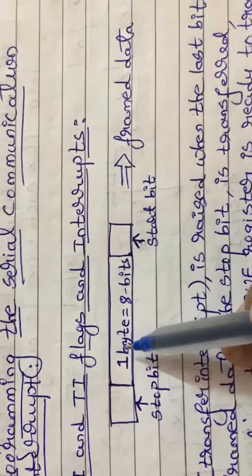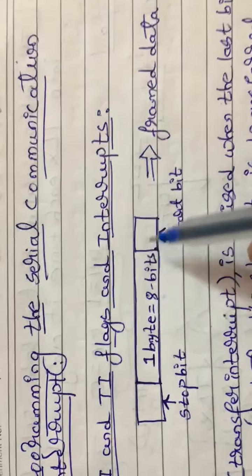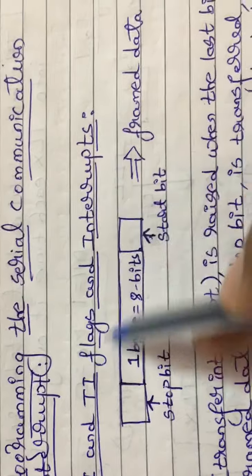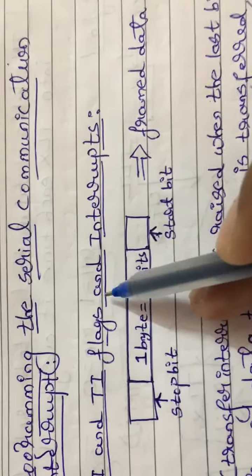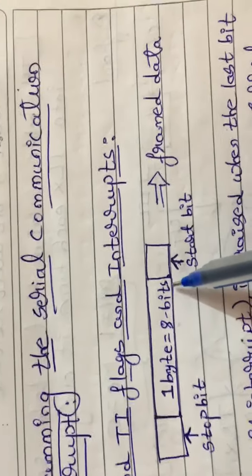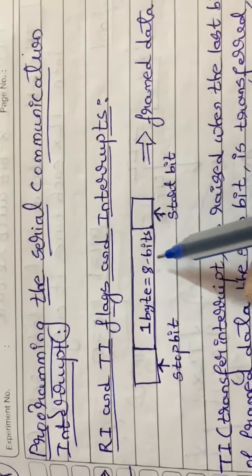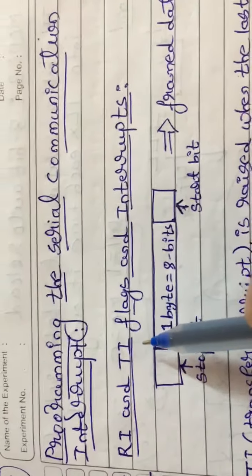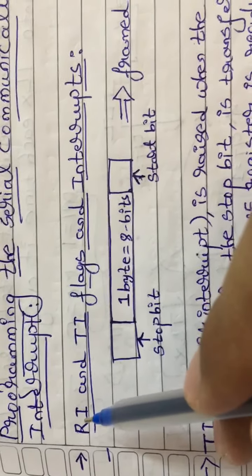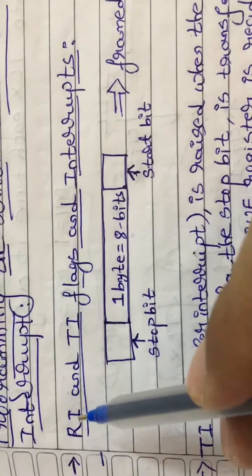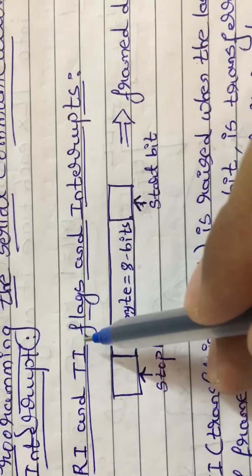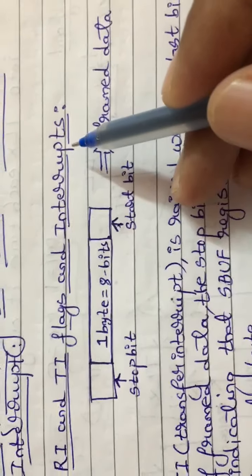In order to transfer or receive data serially, we are going to use two flag registers or flag interrupts: RI, that is the Received Interrupt, and TI, that is the Transfer Interrupt flags.